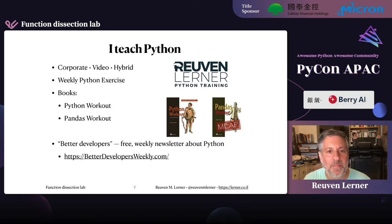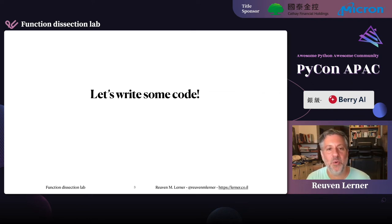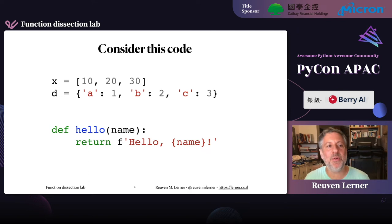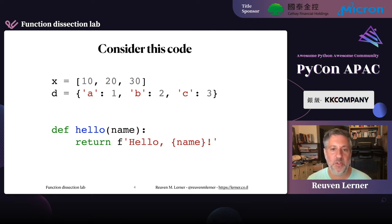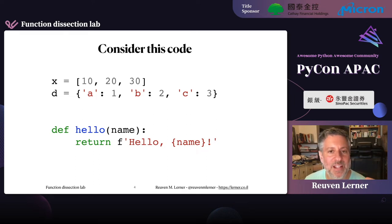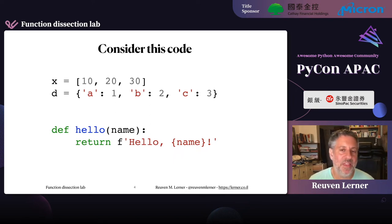But enough about me. Let's write some code and then take it apart. Let's consider this code: x equals [10, 20, 30], d equals {'a':1, 'b':2, 'c':3}, and def hello(name): return f'hello {name}'. So I've got a list, a dictionary, and a function. What does this look like behind the scenes? What's going on here? One of the best ways I've found to look at code is to use something called the Python Tutor, at pythontutor.com.